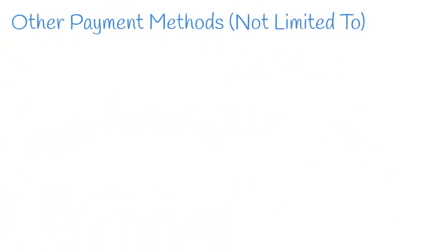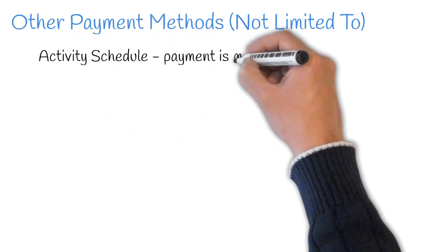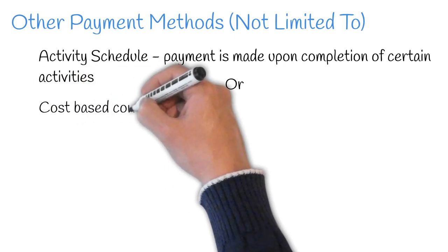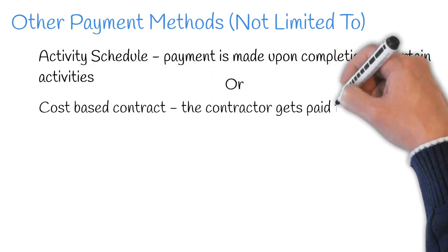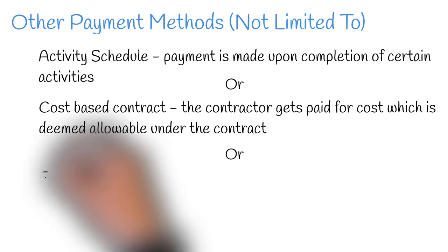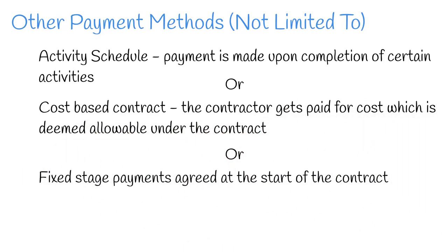Other payment methods will require a slightly different approach. For example, an activity schedule, where payment is made upon completion of certain activities; or a cost-based contract, where the contractor gets paid for cost which is deemed allowable under the contract; or fixed-stage payments agreed at the start of the contract. The type of payment method utilised will impact how the external valuation is carried out. However, the principle is still the same.